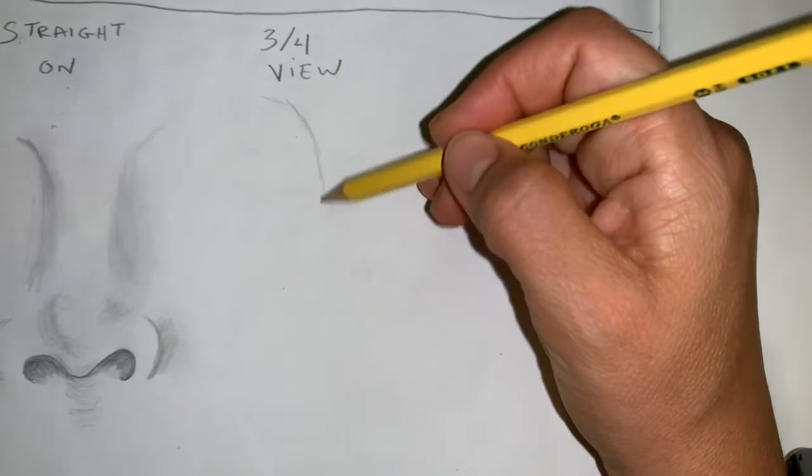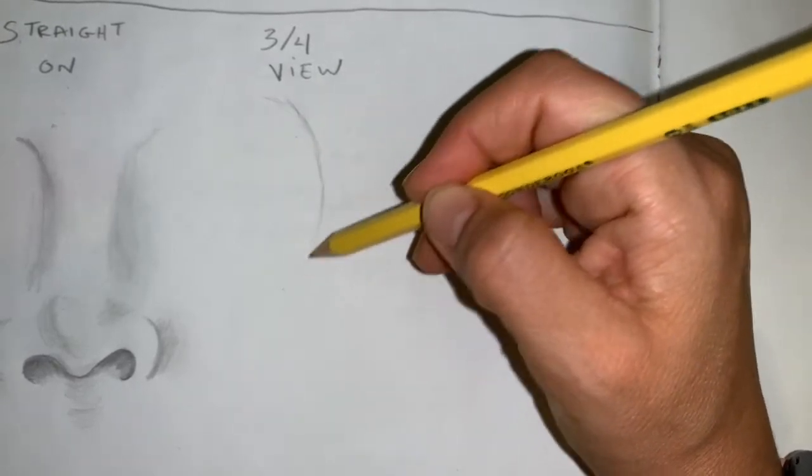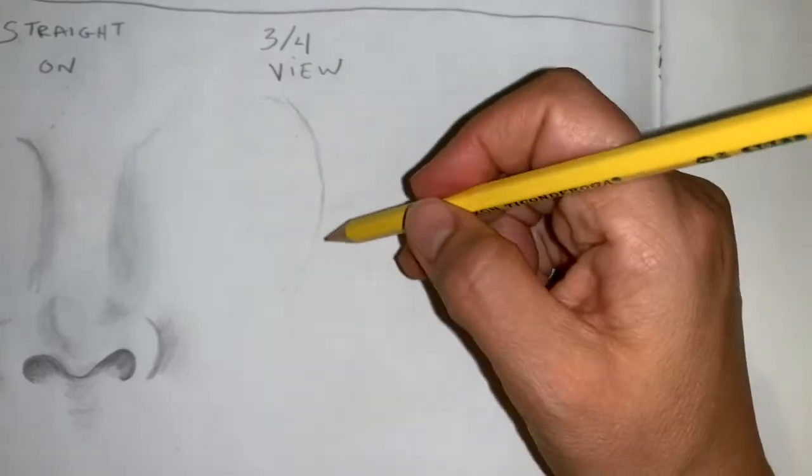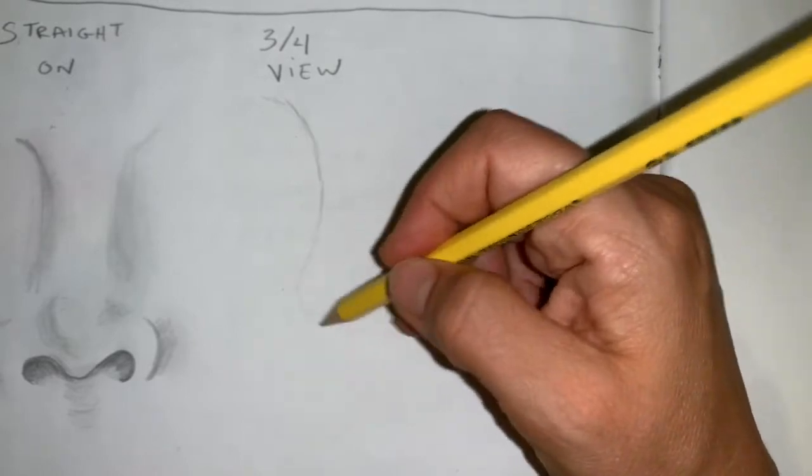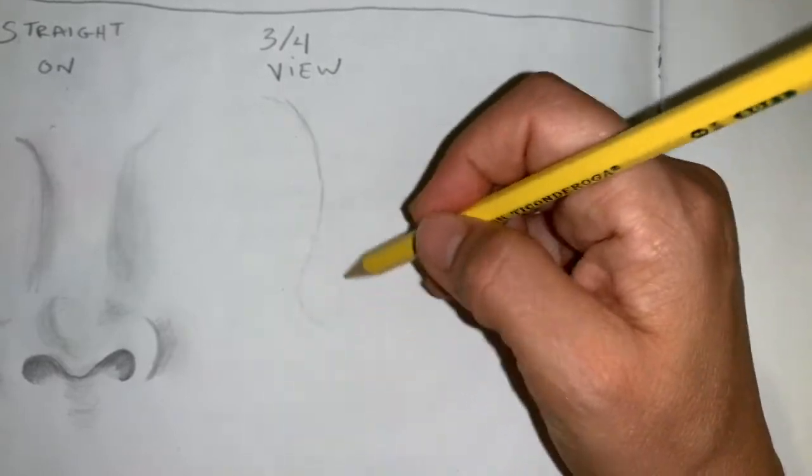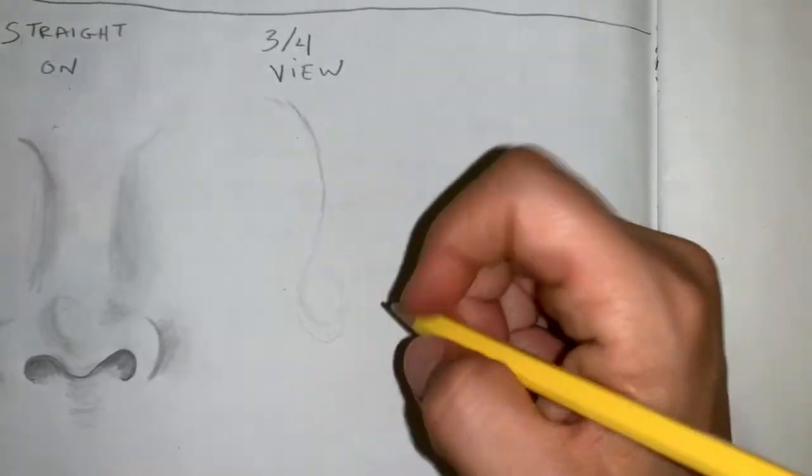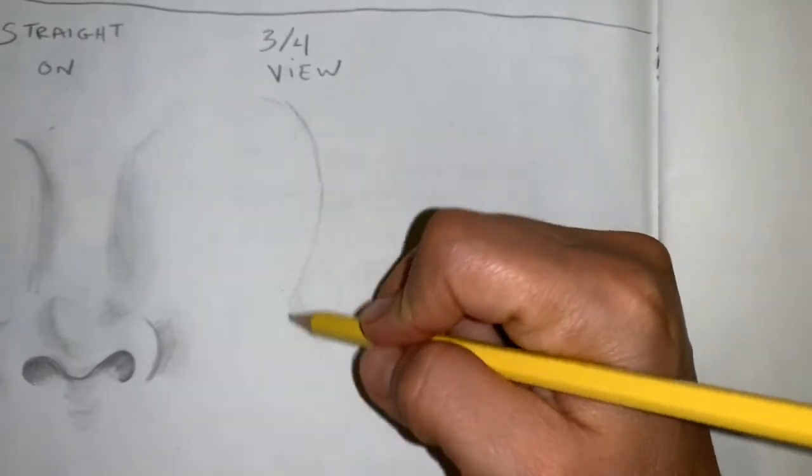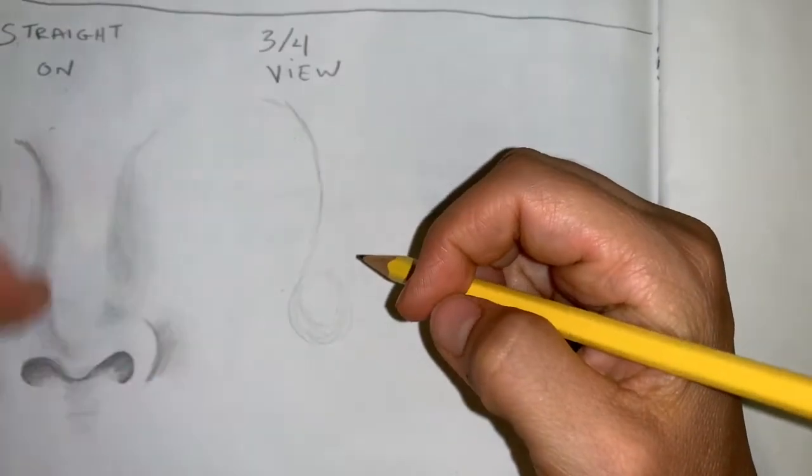Then we're going to bring this line down, really light, just getting an idea of where it's going to go. I'm going to pause for a second and add a bit of a circle down here. Of course, this is one strategy you can use. This nose may not be quite lined up with the other ones, a little higher on the page, so we're not going to worry about that.